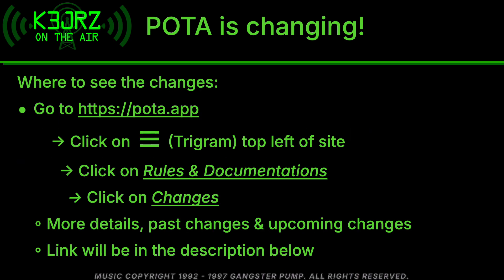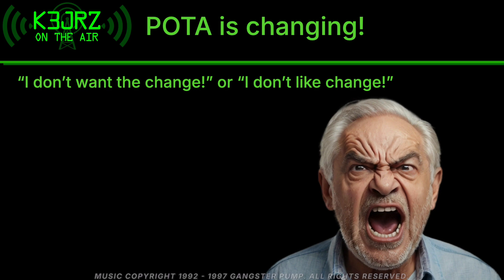So where can you see all these changes? The place to go is the Parks on the Air website at pota.app. Click on the hamburger menu — also called a trigram — in the top left of the site. Go down to Rules and Documents, click on that, then click on Changes. You'll be able to see more details, including past changes and upcoming changes. I'll place a link in the description below.